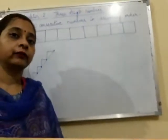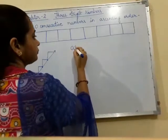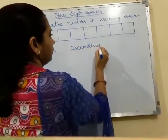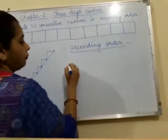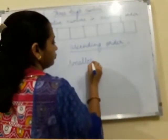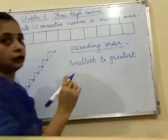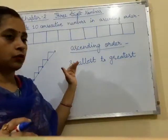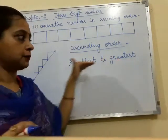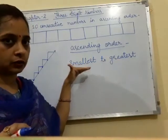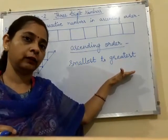Children, what is ascending order? Ascending order means the numbers are arranged from smallest to greatest. Means आपको numbers को इस तरह से arrange करना है कि छोटे से बड़े number की ओर जाना है. सबसे पहले सबसे छोटा number, फिर उससे बड़ा, फिर उससे बड़ा, और सबसे बड़े number को last में लिखते हैं.